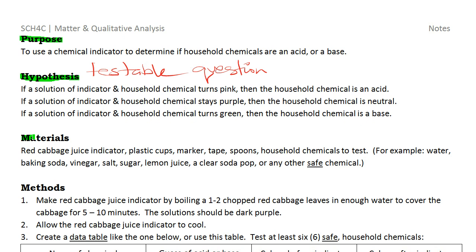If you want to do this lab — and you certainly can, it's pretty easy and safe — you'd need to gather materials: red cabbage to make the indicator, some plastic cups, a marker, maybe tape, some spoons, and some household chemicals to test. For example, you can use water, baking soda and water, vinegar, salt, sugar, lemon juice, or clear soda pop. Any other safe chemical is fine — no Drano, no bleach, nothing dangerous. If you wouldn't put it on your hands, don't use it.